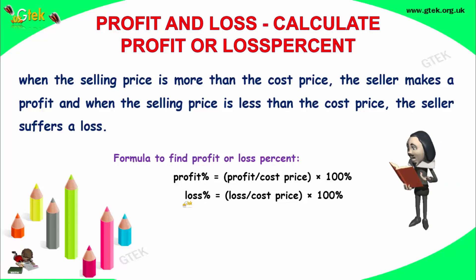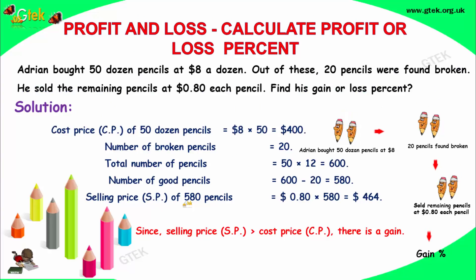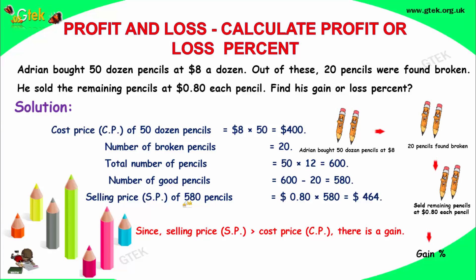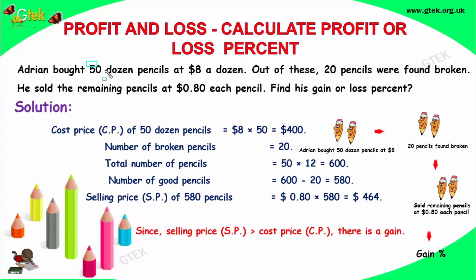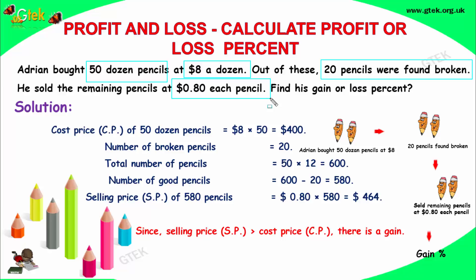Let's see a typical example problem now. Adrian bought 50 dozen pencils at 8 dollars a dozen — that is 12 pencils per dozen. Out of these, 20 pencils were found broken. He sold the remaining pencils at 0.8 dollars each pencil. Whether he got a gain or a loss?